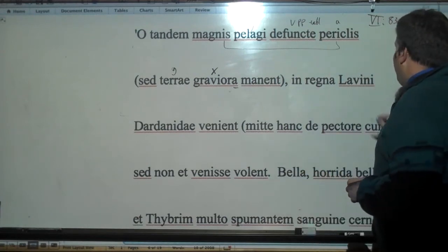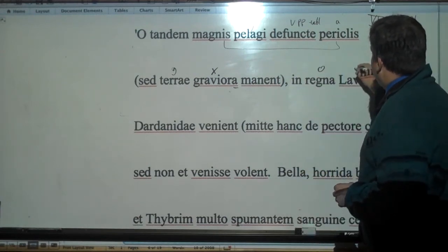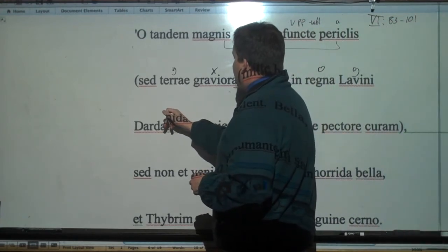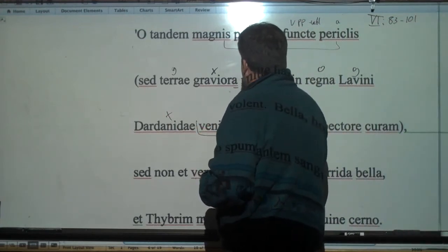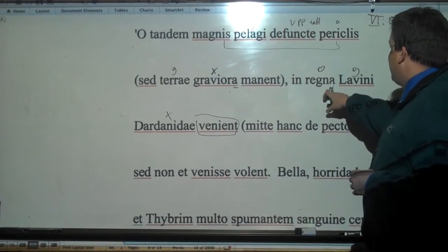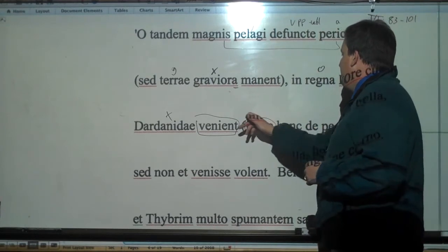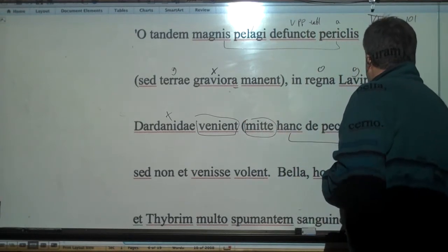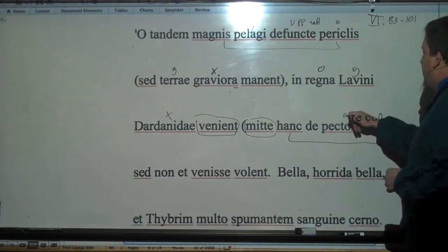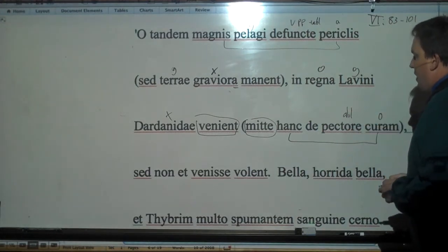In regna Lavini, so this is the object of Dardanidae venient. Watch out, we're going to get a lot of futures here. So the Dardanians, or the Trojans, will come into the kingdom of Lavinium. Mitte, imperative - send this worry from your heart.